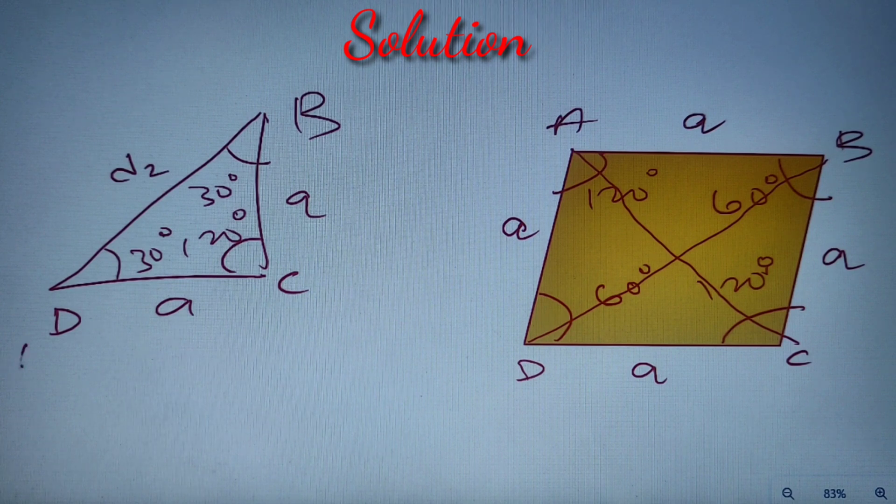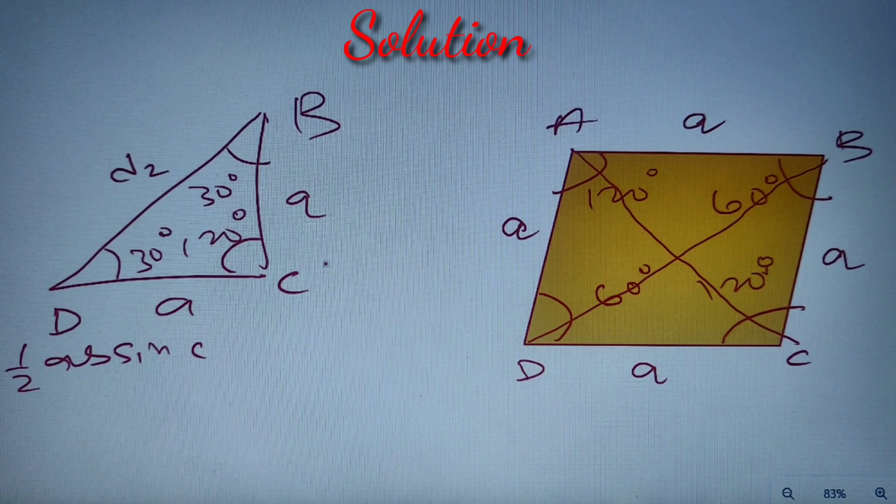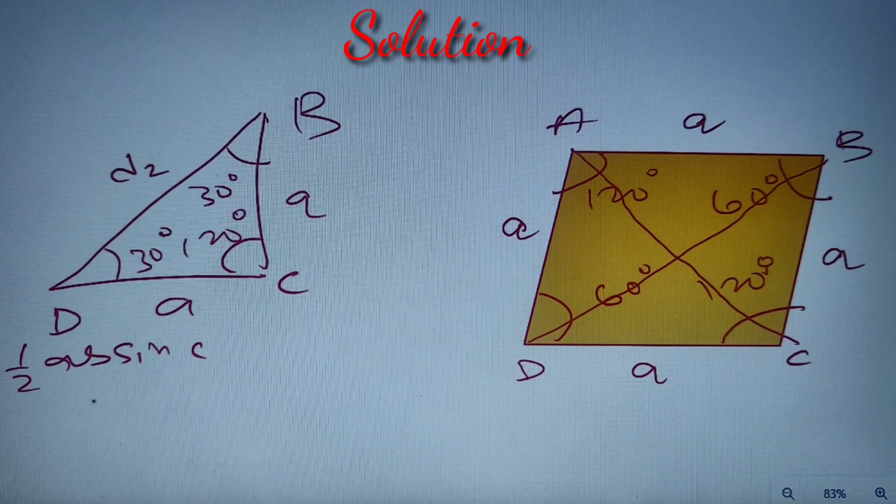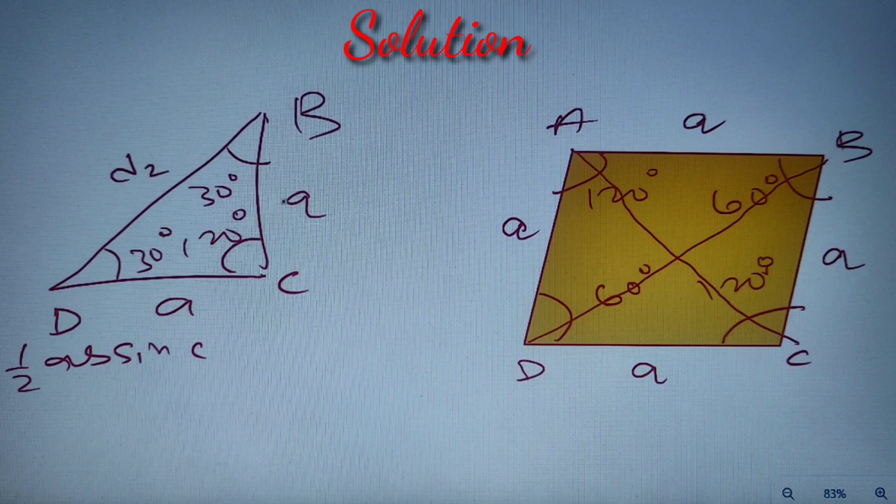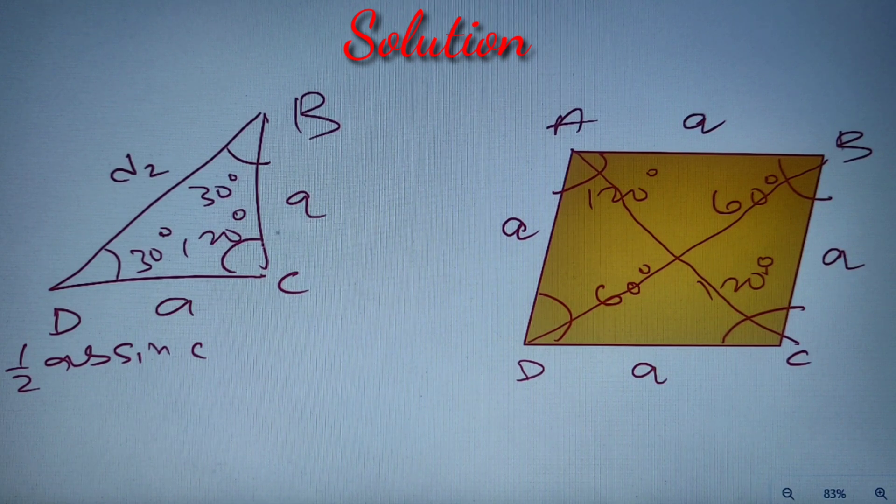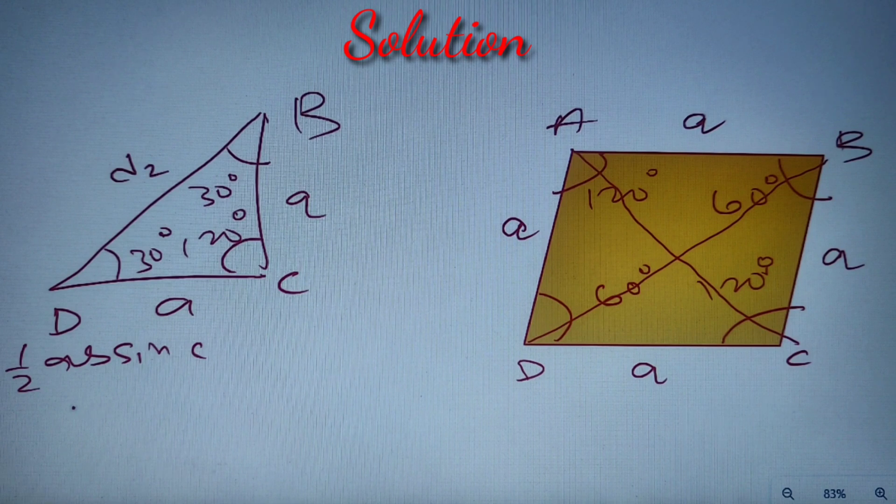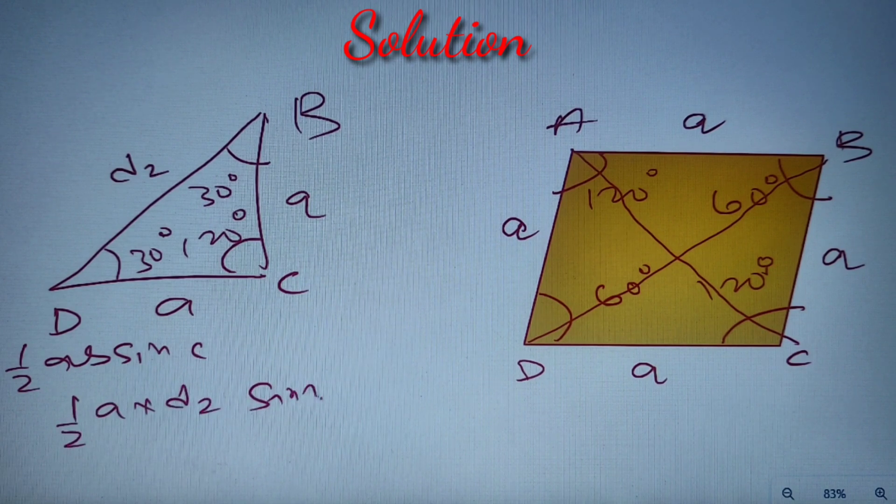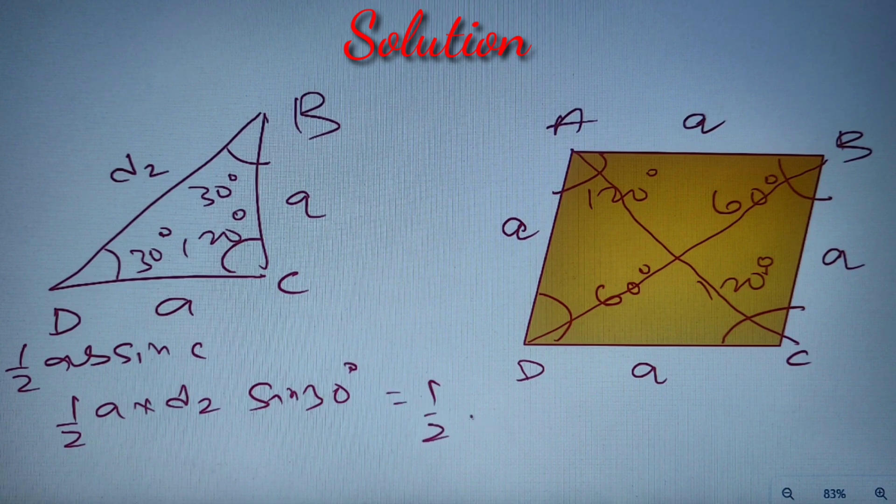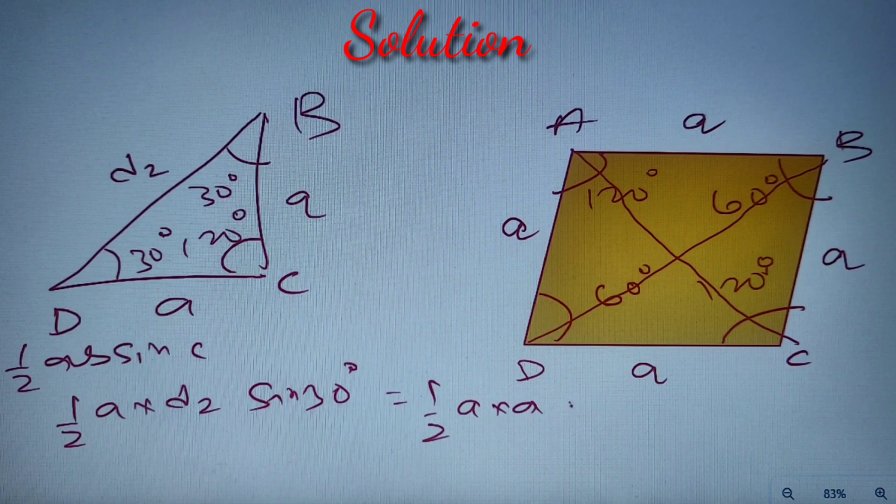We know that the area of a triangle can be represented as half AB sine C, where A and B are the adjacent sides and C is the angle in between. So we can use this formula to calculate the area of the triangle using the sides a, D2, and 30 degrees, and a and 120 degrees. The values are half into a into D2 sine 30 degrees, and it is equivalent to half into a into a into sine 120 degrees.